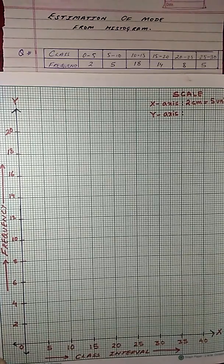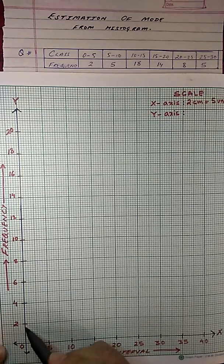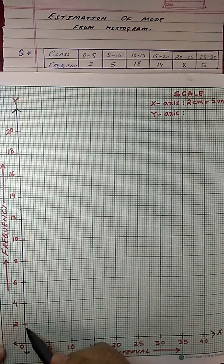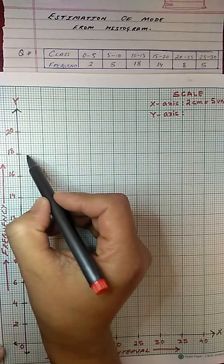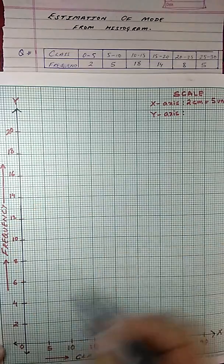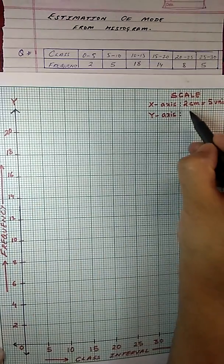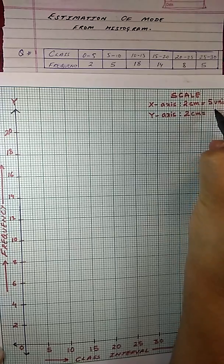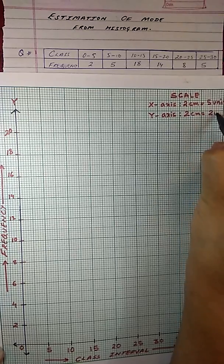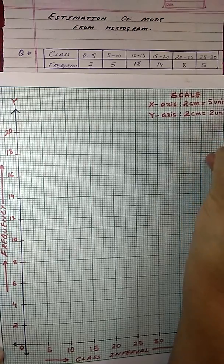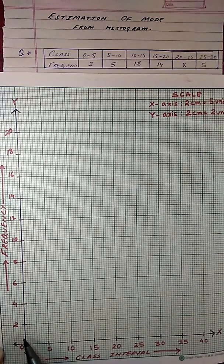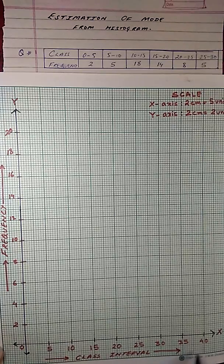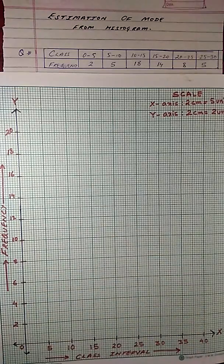Along the y-axis I have taken 2cm equals to 2 units such that the highest value 18 fits inside the graph without any problem. That means for every cm there is 1 unit of frequency. I have also clearly written class interval along x-axis and frequency along y-axis.